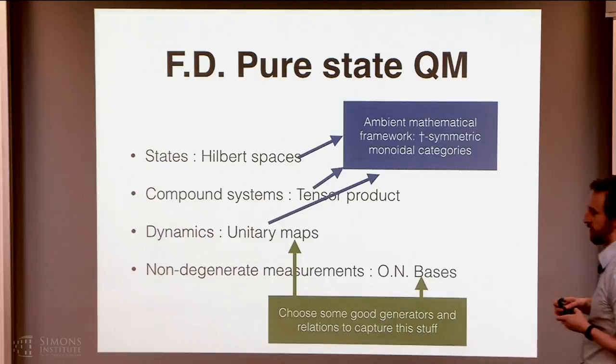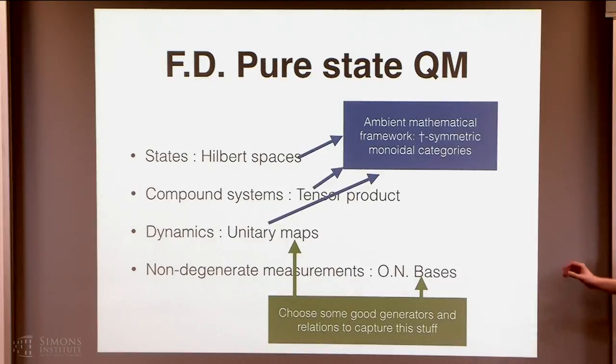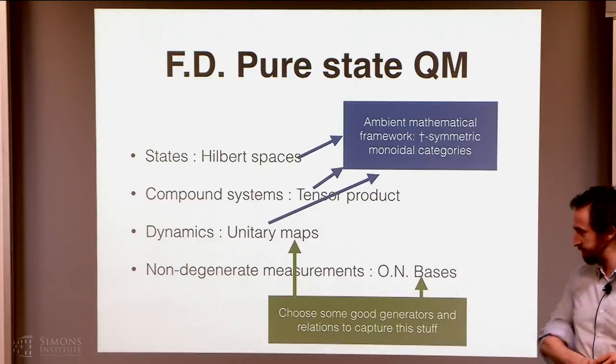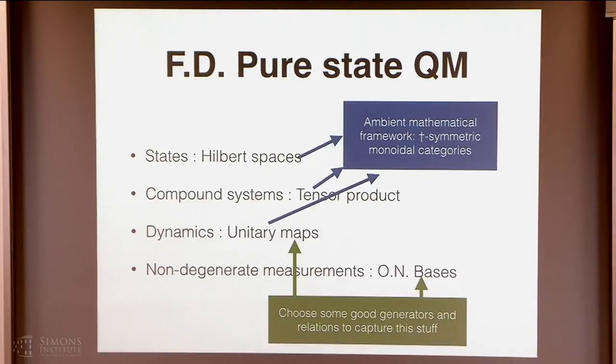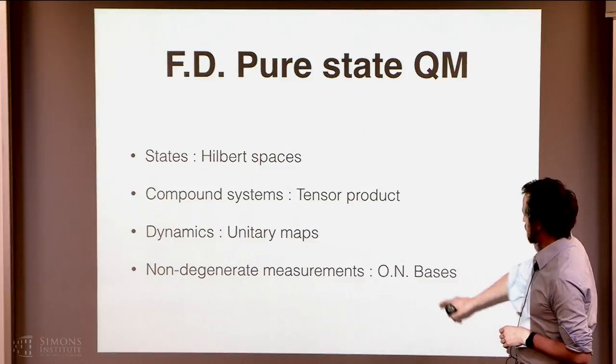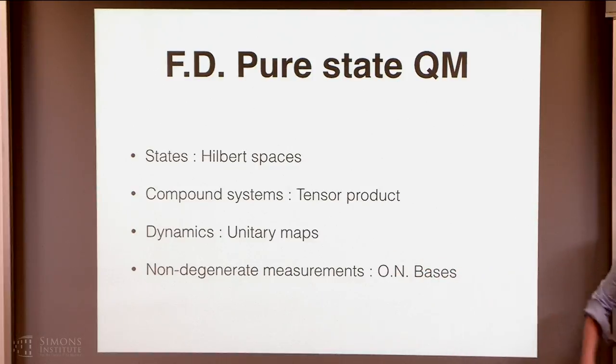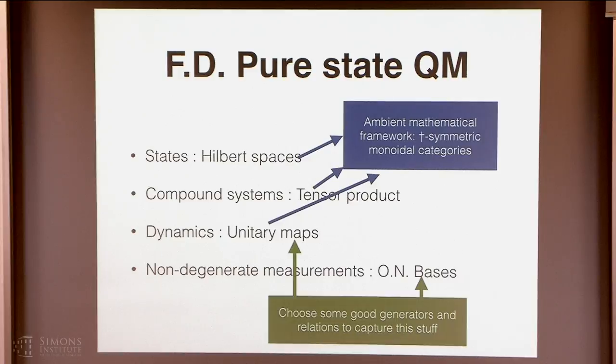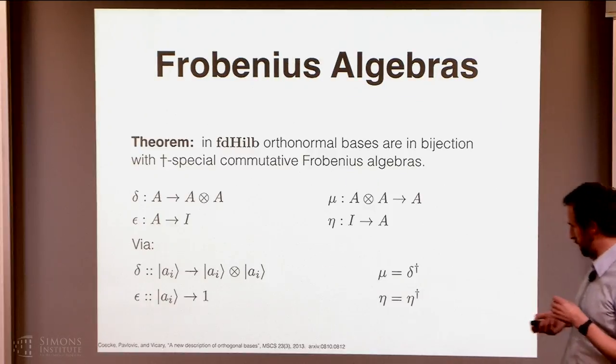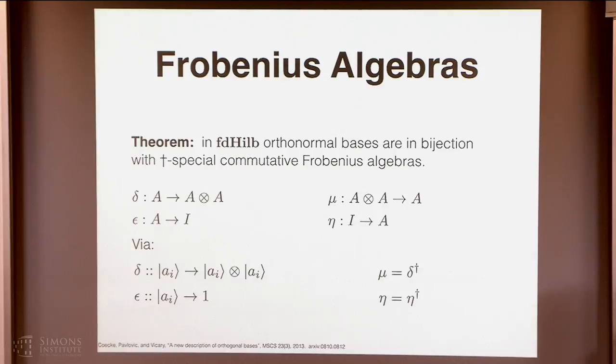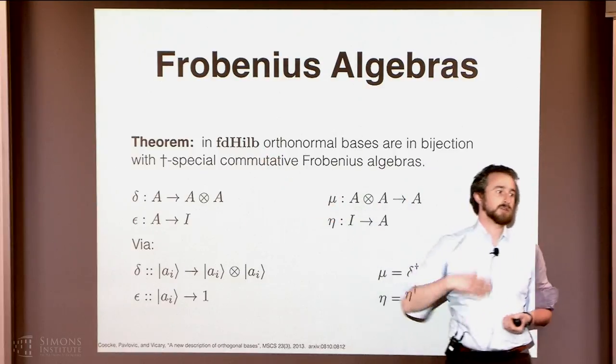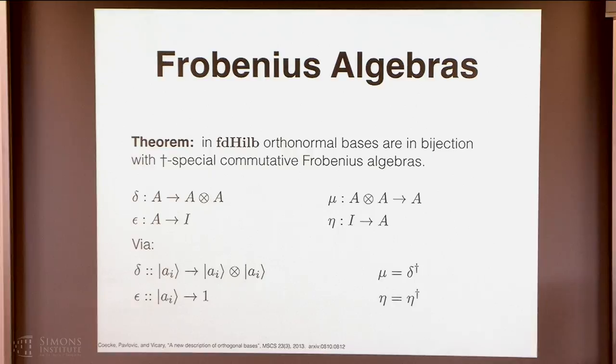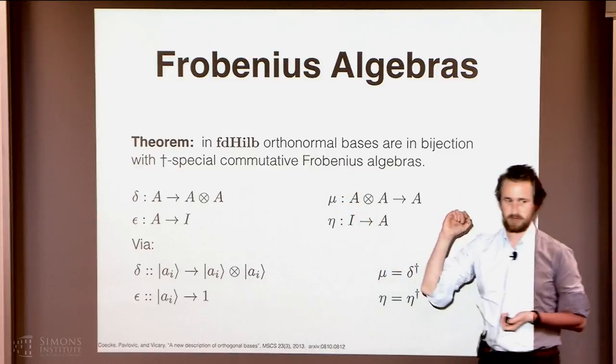And so, the thing we have to do here is to choose some good generators and relations in order to capture as much of the concrete quantum theories we can in this more abstract setting. So, John mentioned in his talk that you could do this kind of work with decorated coast bands. I know how to do some of this in decorated coast bands. The rest, I don't know. So, this is going to be a generators and relations kind of presentation. Okay. So, let's start with these things, right? These are going to be the most important thing, the bases. And we're going to rely on a wonderful theorem of Jamie Vickery and Bob Cooke and Dusko Pavlich, which says that in the category of finite dimensional Hilbert's bases or concrete quantum mechanics, as we might call it, then the orthonormal bases are in bijection with these dagger special community Frobenius algebras.